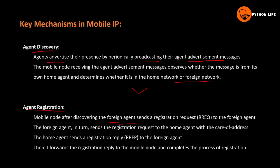For agent registration, the foreign agent sends the registration request to the home agent. This means the mobile node requests registration through the foreign agent. The home agent sends a registration reply to the foreign agent. Then it forwards the registration reply to the mobile node and completes the process of registration.